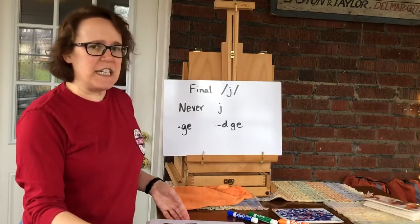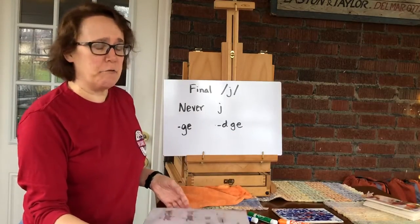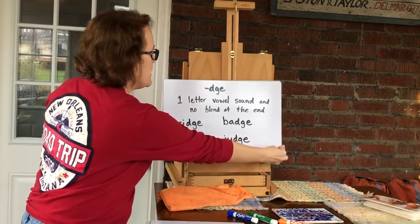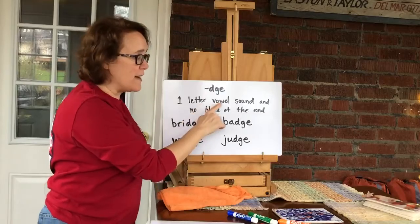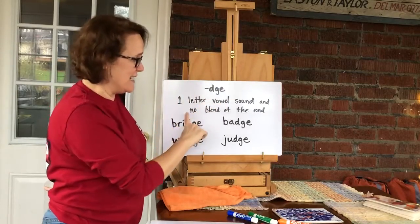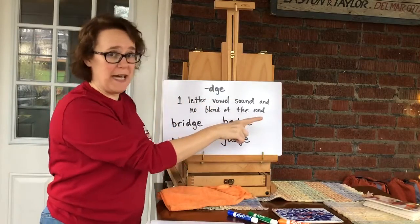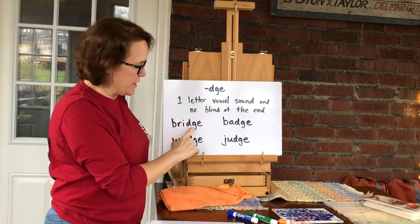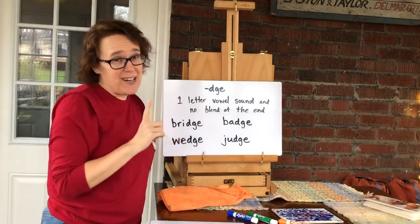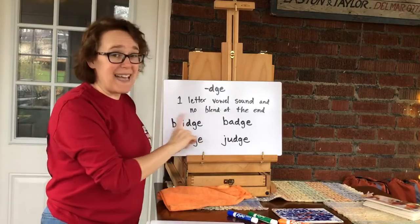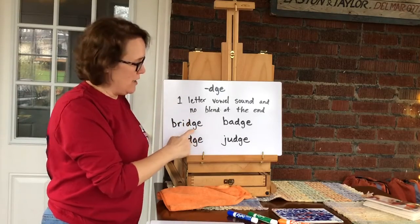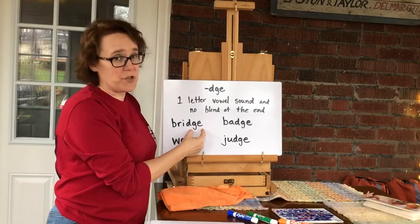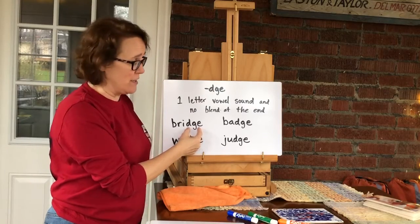Let's talk about that D-G-E first. When do we use that? We use that if there's a one-letter vowel sound and there's no blend at the end. So in this word, bridge — one-letter vowel, no blend at the end, it's just a J — we use the D-G-E. Those three letters are working together to make the J sound.